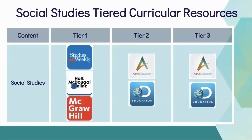What we just did was a Tier One lesson. We also have Tier Two resources: Active Classroom and Discovery Education. In your participant guide, if you click the link and log into Clever, you can access both Discovery Education and Active Classroom. I've also given you a specific Tier Two lesson for the Industrial Revolution — please take time to view that.